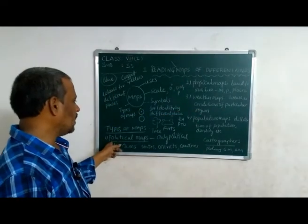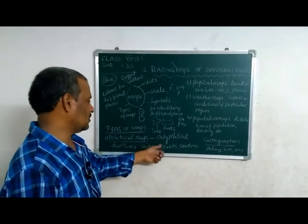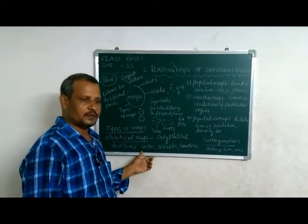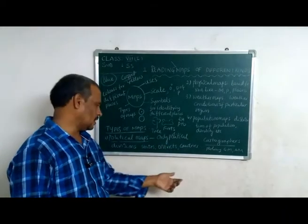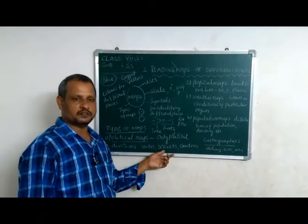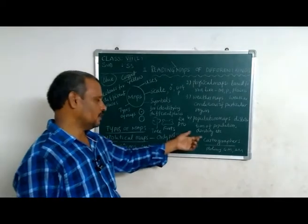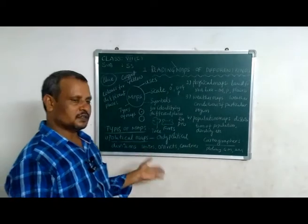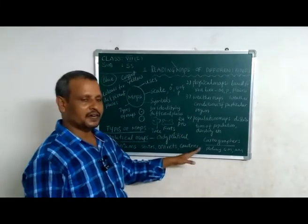Political maps show only political features like states, capitals, districts, and headquarters. For example, states and their capitals — Arunachal Pradesh with Itanagar, Assam with Dispur, and so on. District headquarters such as East Godavari headquarters at Kakinada, and West Godavari headquarters. Political maps also show countries and their capitals, and political divisions of states, districts, and countries.